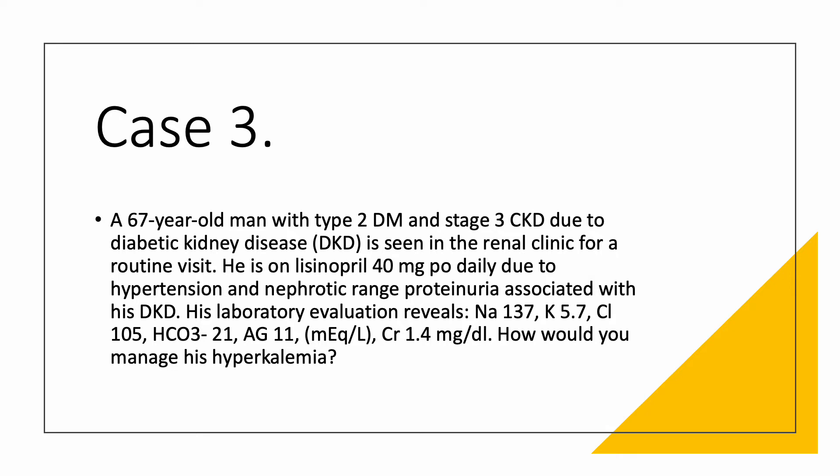Potassium is high at 5.7, chloride 105, bicarbonate 21. Anion gap calculated at 11. Creatinine is elevated at 1.4, consistent with Stage 3 chronic kidney disease. How would you manage his hyperkalemia?